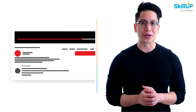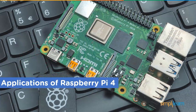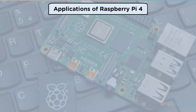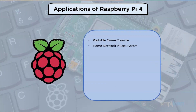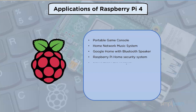Now let us look at some of the applications of Raspberry Pi 4. Raspberry Pi 4 is used for a portable game console, home network music system, Google Home with Bluetooth speaker, Raspberry Pi security system, and social media bot using Raspberry Pi 4.